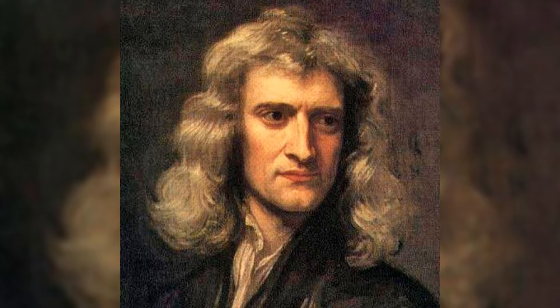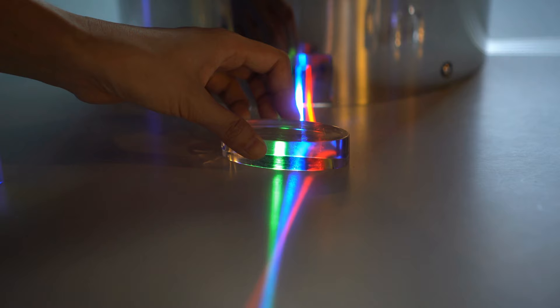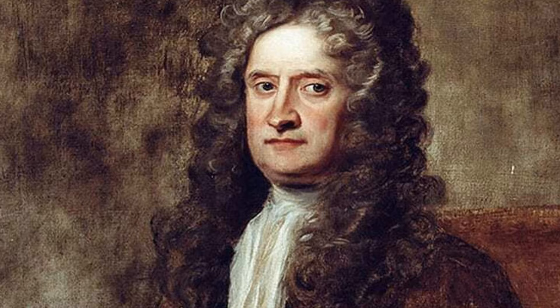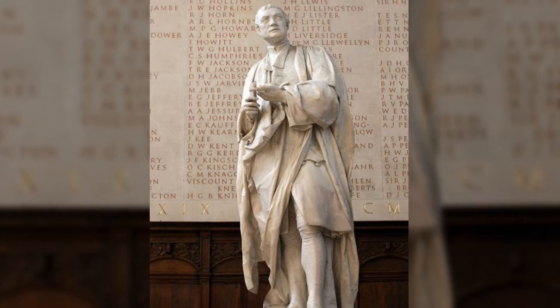Newton's development of calculus, which he called the method of fluxions, revolutionized mathematics, providing a powerful tool for solving problems in physics and engineering. His insights into the nature of light and optics led to the development of the reflecting telescope and the theory of colors. Additionally, Newton made significant contributions to the study of differential equations, infinite series, and the binomial theorem. His profound impact on mathematics and science transformed our understanding of the physical world and established him as one of the most influential figures in the history of science.